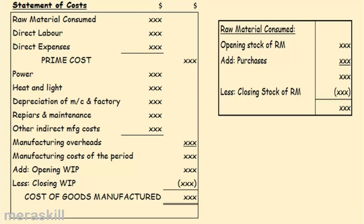Raw material consumed plus direct labor plus direct expenses gives you prime cost. Then you have power, heat and light, depreciation, repairs, maintenance, and other indirect manufacturing costs — all of these are nothing but manufacturing overheads.